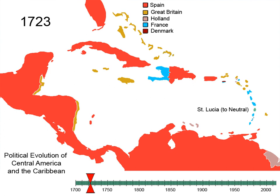Sugarcane grows in hot, humid climates. After landing in the Canary Islands, Christopher Columbus brought sugarcane to the Caribbean during his second voyage to the Americas, in 1493.